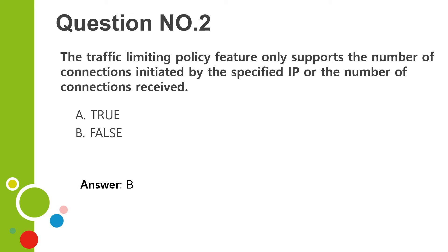Question number two. The traffic limiting policy feature only supports the number of connections initiated by the specified IP or the number of connections received. A. True. B. False. Answer: B.